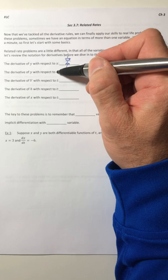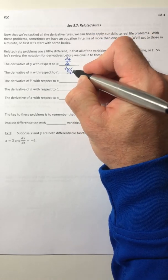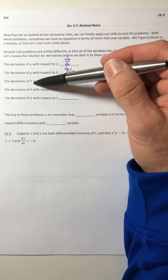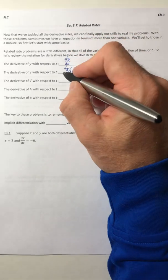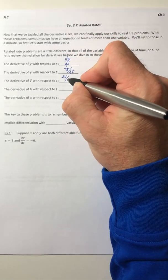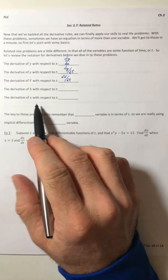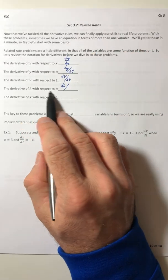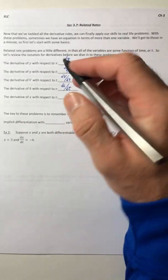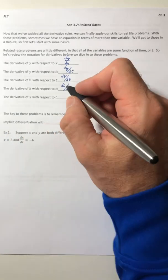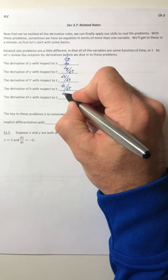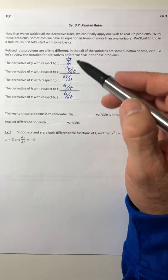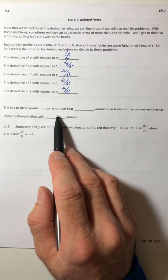What about the derivative of v with respect to t? So the derivative of v with respect to t: dv/dt. The derivative of h: dh, and it's still with respect to t, so dt. And the derivative of x: so the derivative of x with respect to t, dx/dt.